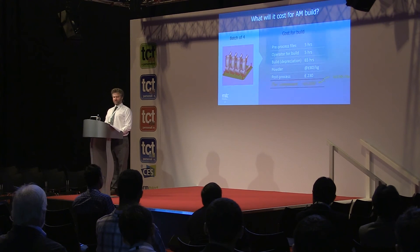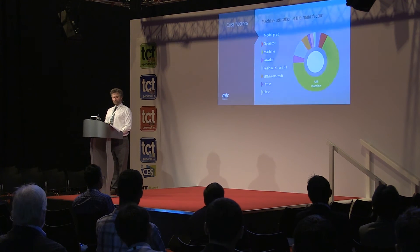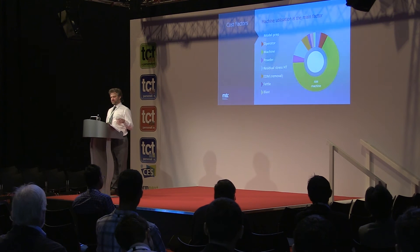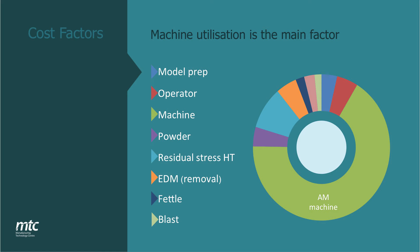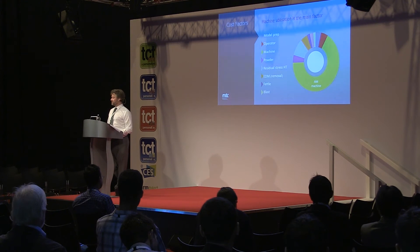Breaking down the cost as a pie chart, about two thirds of the cost is the AM machine cost — depreciation and long build time. The message to machine manufacturers is clear: bringing machine prices down will make the process more accessible. At £1,200 a part, it's too expensive for mass production.